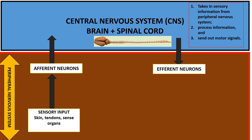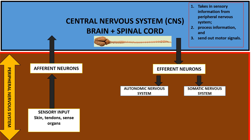The information taken to the effector organs can be involuntary in nature via the autonomic nervous system, or it can be somatic in nature. The involuntary information regulates physiologic processes such as heart rate, blood pressure, respiration, digestion, and certain reproductive processes.